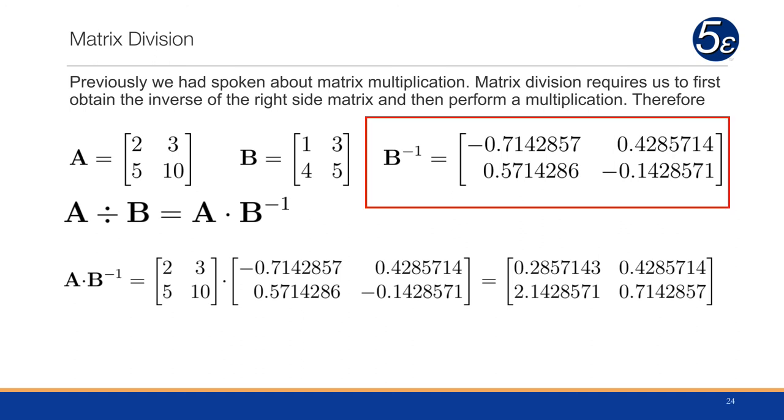When we find the inverse, it just becomes a straight multiplication, A times the inverse of B. So therefore, if we're dividing A divided by B, we're actually going to be multiplying A times the inverse of B. And we have the example here below.